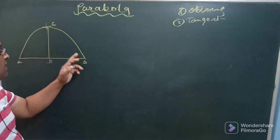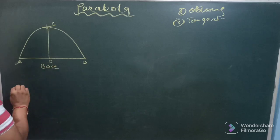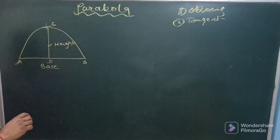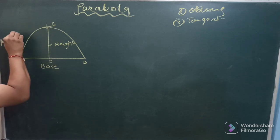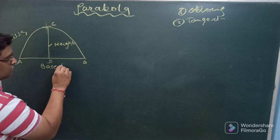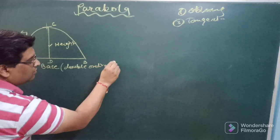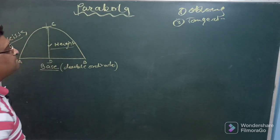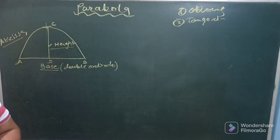So this is the parabola where AB is nothing but base of the parabola and CD is generally known as height of the parabola. This CD is also termed as abscissa and this base is also termed as double ordinate. So in the problem, if double ordinate is written means it is base. If abscissa is written it means it is height.